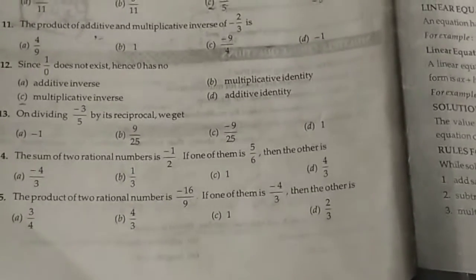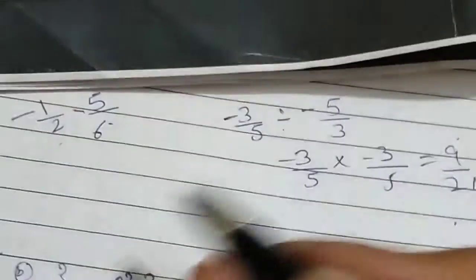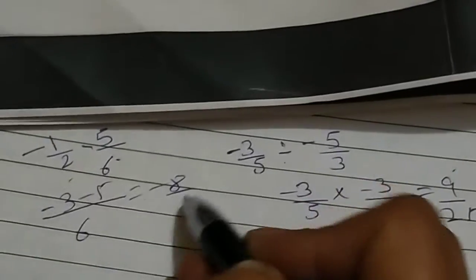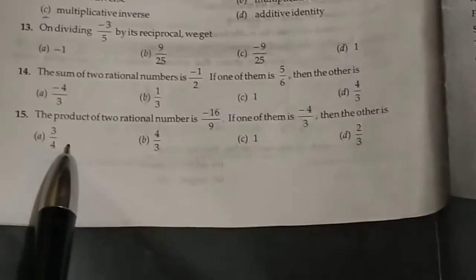The sum of two rational numbers is minus one by two. Other one is five by six. So second number, we will do sum: six minus three minus five is minus eight by six, that is minus four by three.